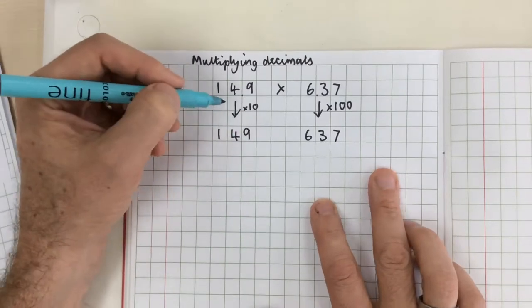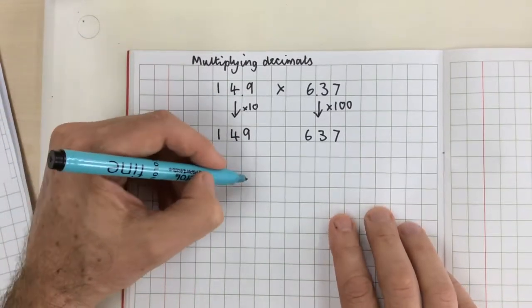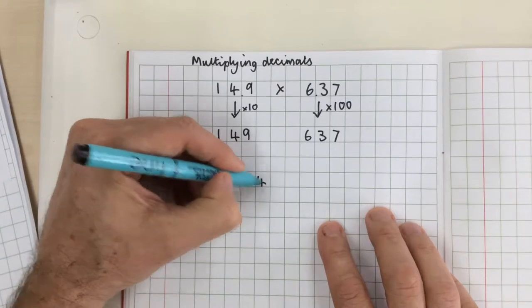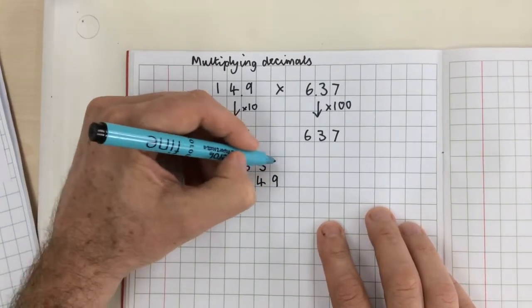I'm then going to adjust my answer afterwards. So I've got 149 times 637.